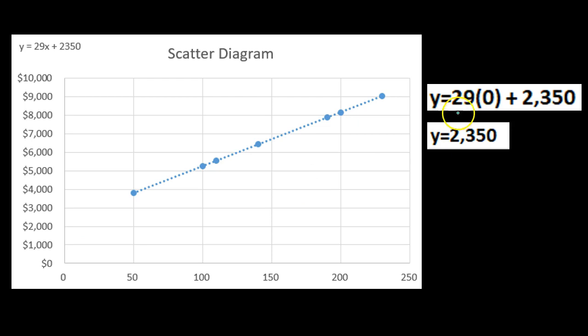So how do we do that? We set the x to be zero and then solve the equation. So y equals 29 times zero plus 2,350, y equals 2,350. In other words, if we were to extend this line out, it's going to hit the vertical axis at 2,350, and that then is what we would think would be the fixed portion of this mixed cost.